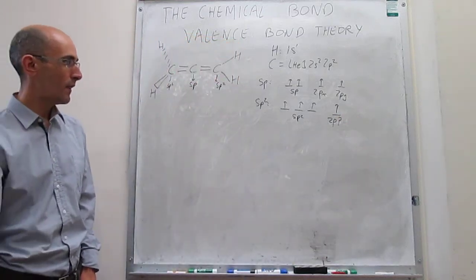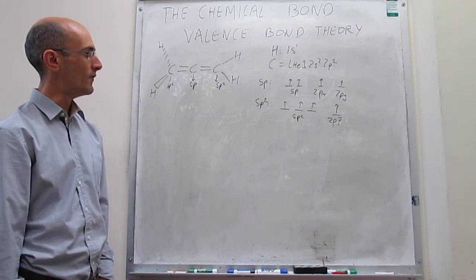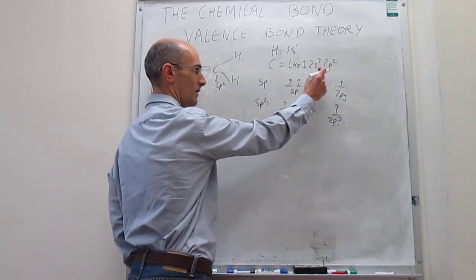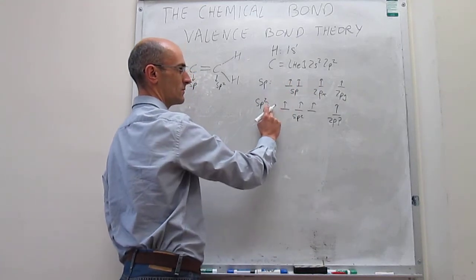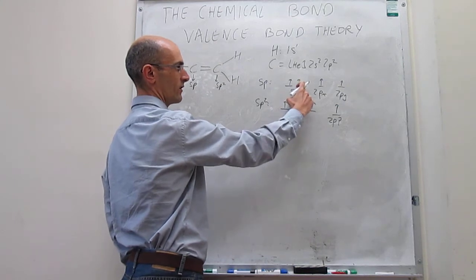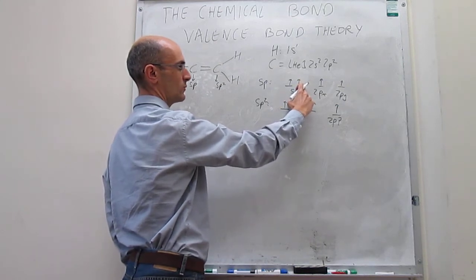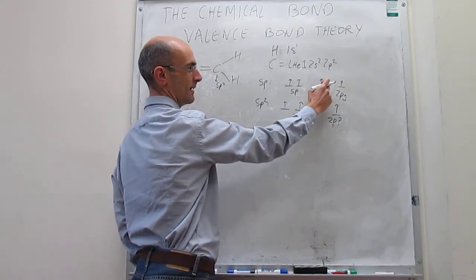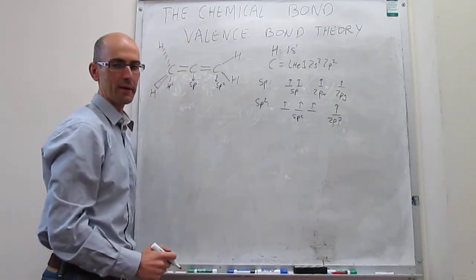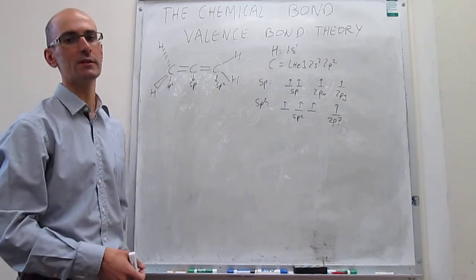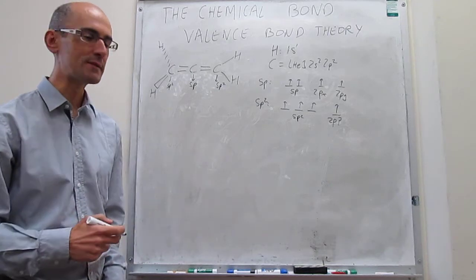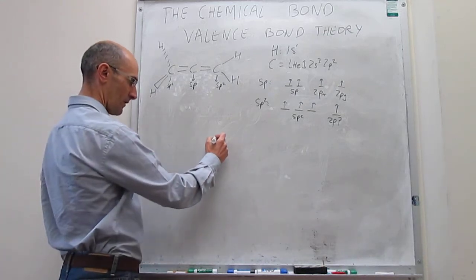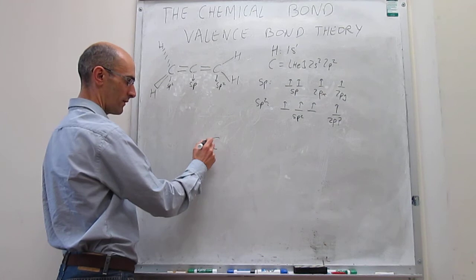We can start to see how the overlaps might take place. There can be interactions between the sp and sp2 orbitals — for example, there is potentially one overlap between an sp orbital and an sp2 orbital. There may also be overlaps between the unhybridized 2px orbital and another 2px orbital. Let's go slowly and try to see how those overlaps take place. We're going to draw the central atom first — we know it is sp hybridized.